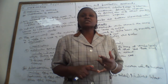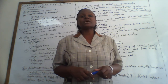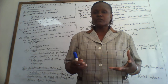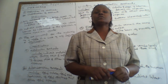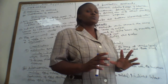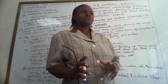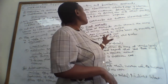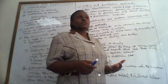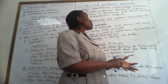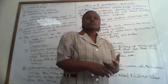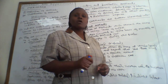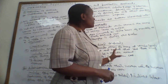Then we have selling and distribution overheads. These are the overheads which are incurred when you are taking the finished goods to the customer. Any expense incurred when taking goods to the market we call selling and distribution expenses. They mostly include advertisement, also called marketing expenses, and the salaries and wages paid to the sales people taking goods to the market.